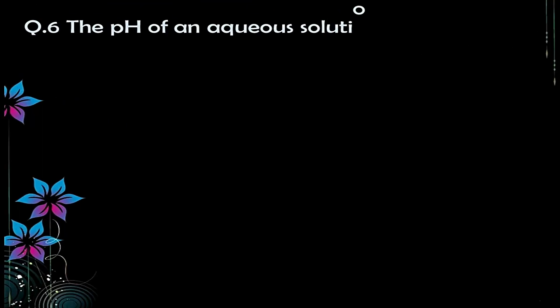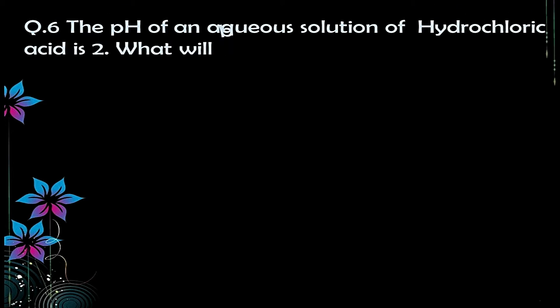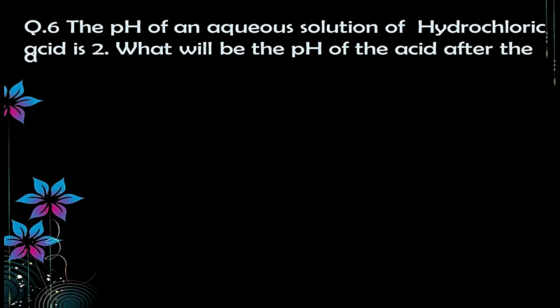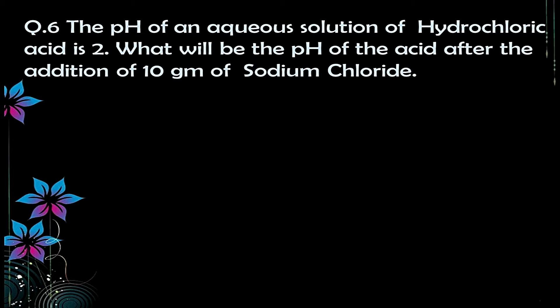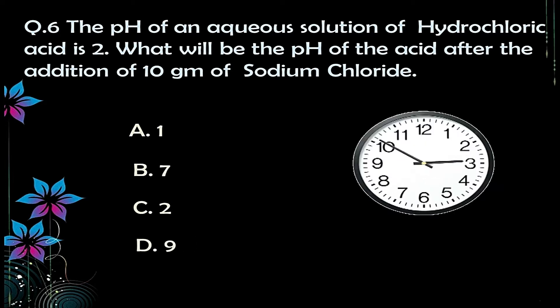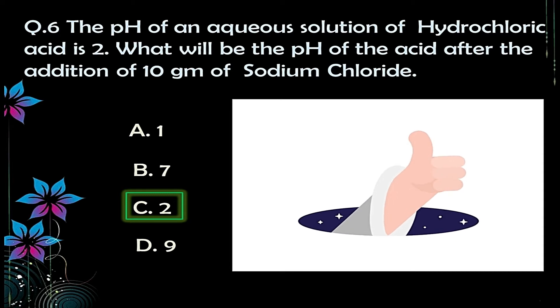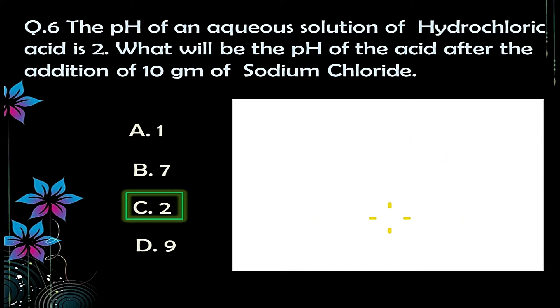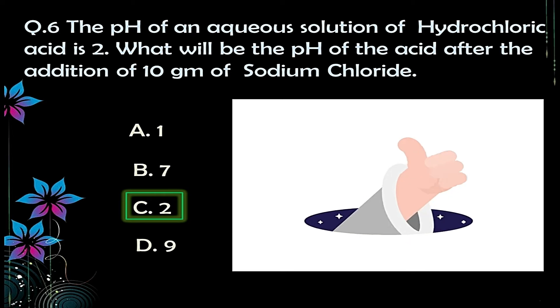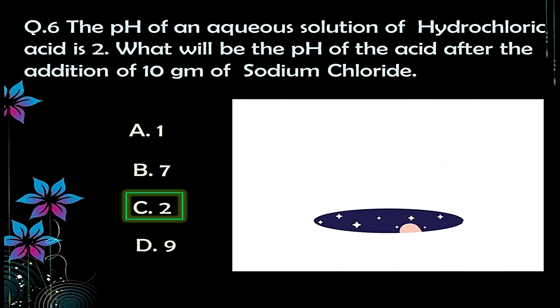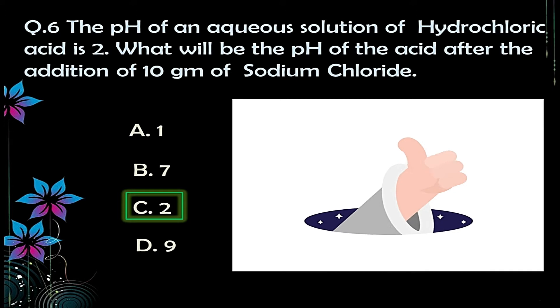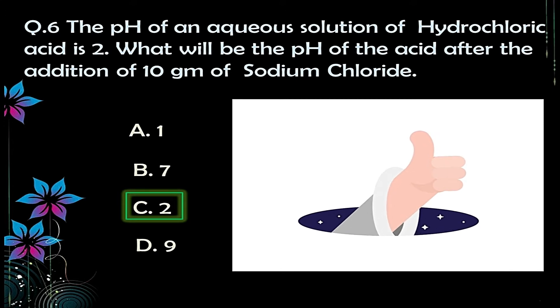Question number six: the pH of an aqueous solution of hydrochloric acid is 2. What will be the pH of the acid after the addition of 10 grams of sodium chloride? Options: A) 1, B) 7, C) 2, D) 9. The correct answer is option C — 2 — because sodium chloride is a neutral substance, so there is no change in concentration of H⁺ ions, and pH remains the same since pH depends on hydrogen ion concentration only.